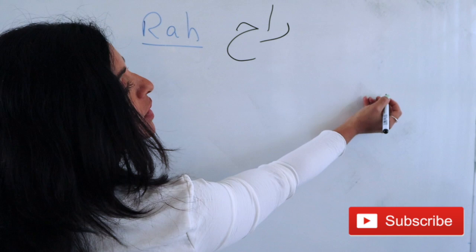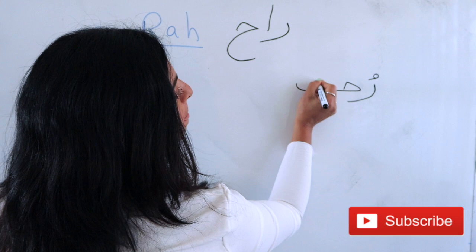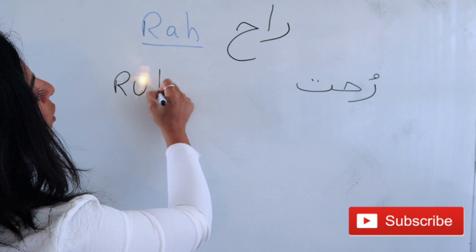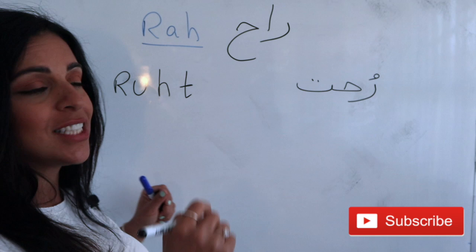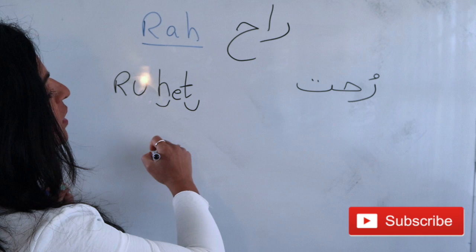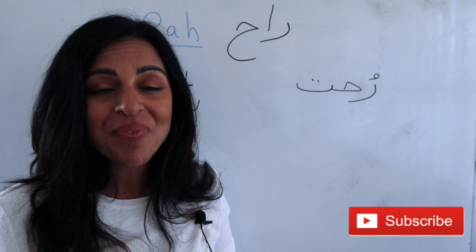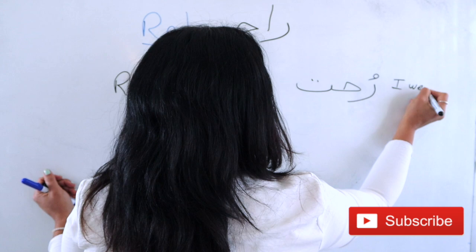If I want to say 'I went,' we say: Ana rahht. What happens to the vowel A is it becomes 'roh.' And what we add is T. Sometimes people say rohht to simplify, adding the consonant H and T. So rohht or rahht — this is how we say 'I went.' Ana rahht. I went.